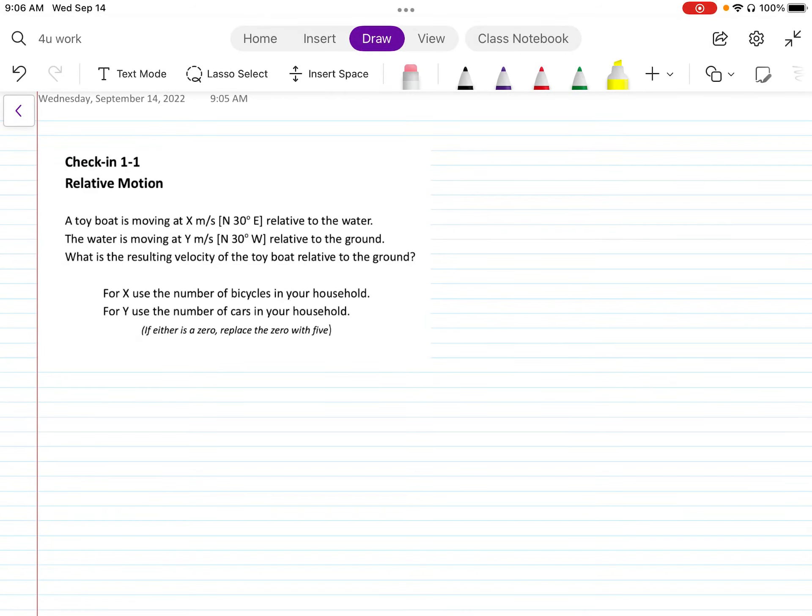This is one of those relative motion questions where we know everything on the right hand side of the equal sign. We know what the boat is doing, we know what the water is doing. So for this one we literally just have to draw those two vectors and then add them.